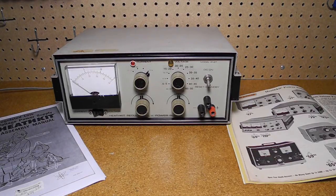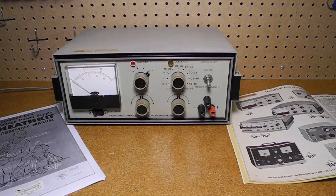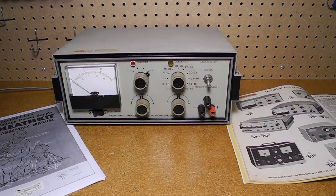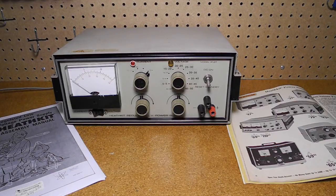In 1975, the IP27 was superseded by the IP2700 series of power supplies, which offered analog or digital meters, and models having four different maximum output voltages.